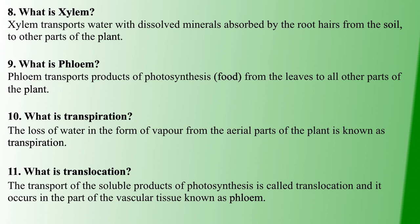Translocation is another term to identify. Translocation is the transport of soluble products of photosynthesis from one location to another. The soluble products of photosynthesis are transported through phloem, which is a vascular tissue. Phloem carries out the translocation process.